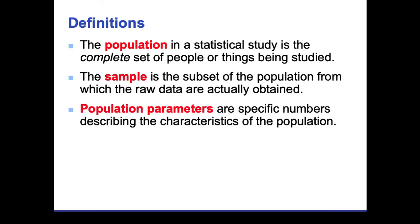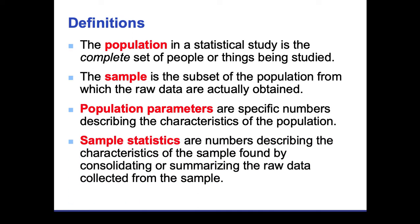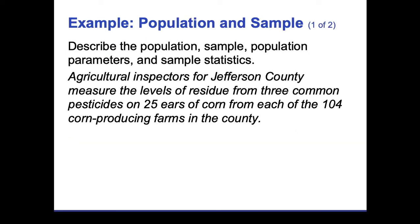Population parameters are specific numbers describing the characteristics of the population — for example, whether you're surveying a low-income population, a middle-income population, immigrants, or people in the military. The same concept applies to sample statistics, which describe the number of people characterized by a certain trait. Let's look at an example to illustrate population, sample, population parameters, and sample statistics.